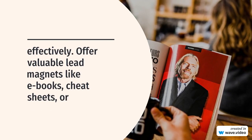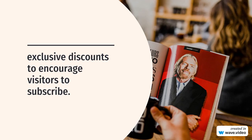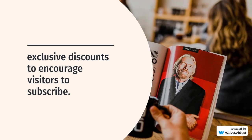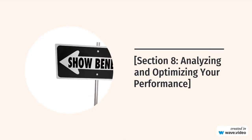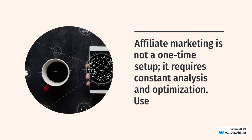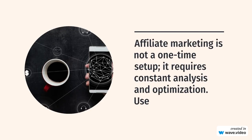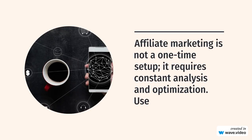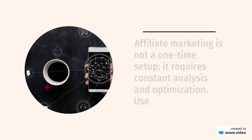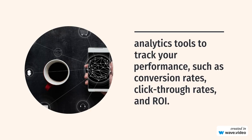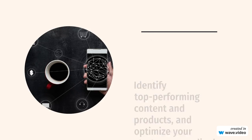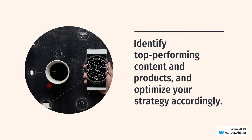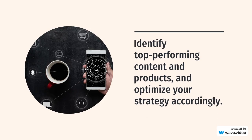Section 8: Analyzing and Optimizing Your Performance. Affiliate marketing is not a one-time setup — it requires constant analysis and optimization. Use analytics tools to track your performance, such as conversion rates, click-through rates, and ROI. Identify top-performing content and products, and optimize your strategy accordingly.